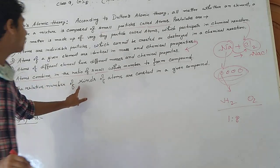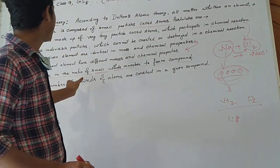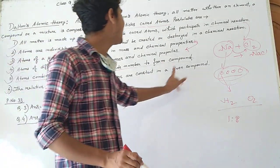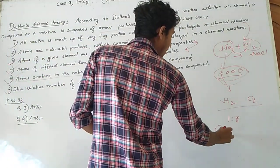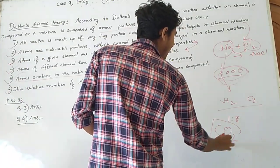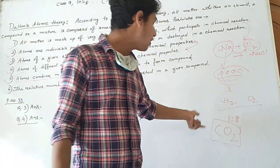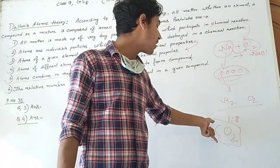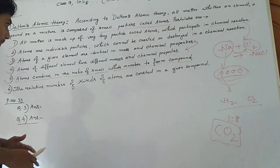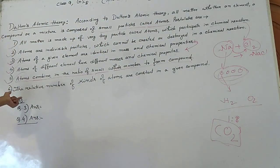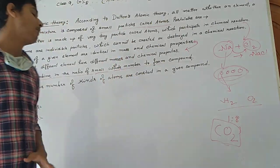Postulate number 6 states: the relative number of kinds of atoms are constant in a given compound. For example, in carbon dioxide, the relative number of atoms is constant. We will discuss how to calculate the relative atomic number in the next chapter. Remember this sixth postulate.